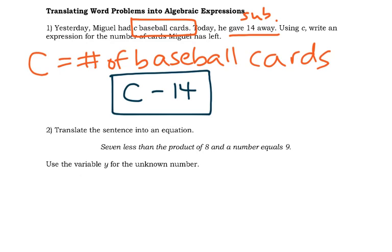Now for the second one, it says translate the sentence into an equation. Seven less than the product of 8 and a number equals 9. Use the variable y for the unknown number.